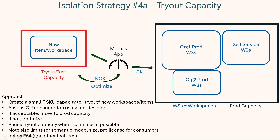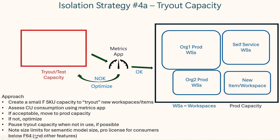The first concept — and this is the one I recommend — is a tryout capacity. You create a small F SKU capacity to try out new content, either putting an individual new item there or a whole workspace. Then keep an eye on the metrics app to see how much compute this new content is taking. If it looks good, you can move that content over to your prod capacity with confidence that it won't cause an impact.